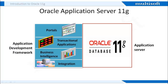Oracle Application Server 11G provides a complete infrastructure platform for developing and deploying enterprise applications. It integrates many functions, including a J2EE and web services runtime environment, an application portal, an enterprise integration broker, business intelligence, web caching, and identity management services. Oracle Application Server 11G is the only application server to include services for all the different server applications that you might want to run.